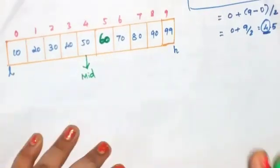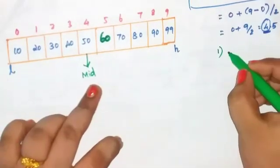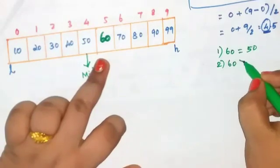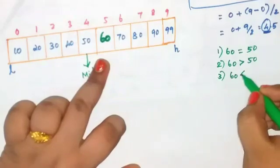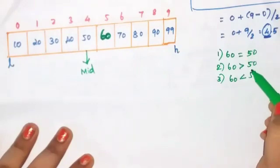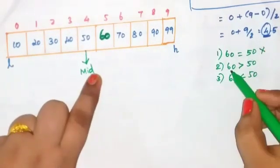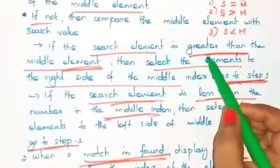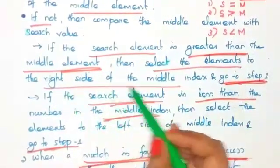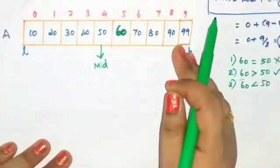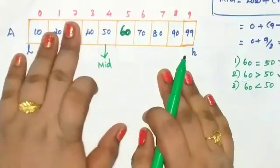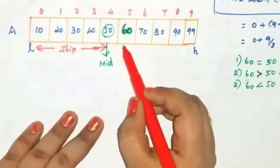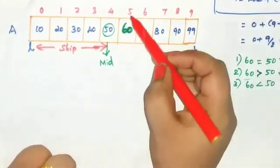Your search element is 60. Check the three cases: is 60 equal to 50? No. Is 60 greater than 50? Yes — this case is true. Since the search element is greater than the middle element, select the elements to the right side of the middle element and skip the left-side elements. The new low becomes mid + 1, which is 5.